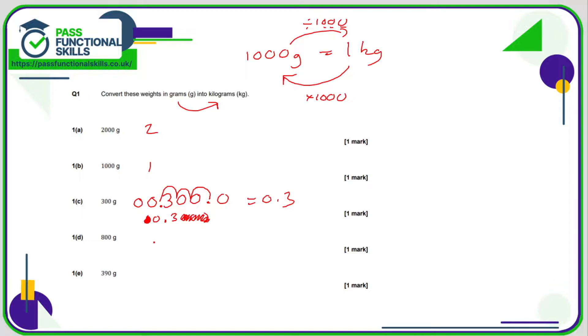So therefore 800 will be 0.8. 390. Let's write it as a decimal. 390.0. Put some zeros in front. Move the decimal point one to three positions. So the answer is 0.39.